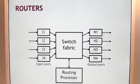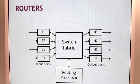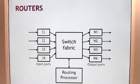Forwarding tables are used by internet routers to move data from source to destination. When a packet is received by a router, the router does a lookup of the packet's destination address in its forwarding table.